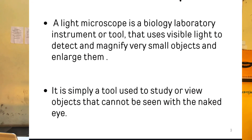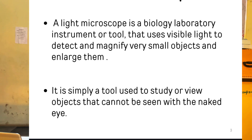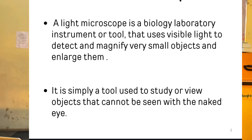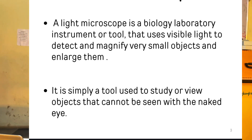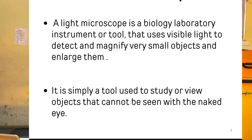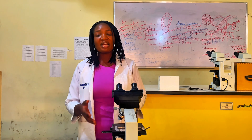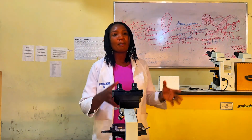The light microscope is a biology laboratory tool or instrument that uses visible light to detect and magnify very small objects or microorganisms. The light microscope makes use of a beam of light to produce an image.